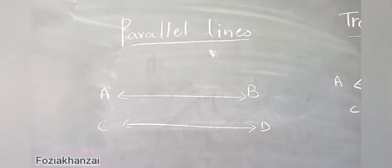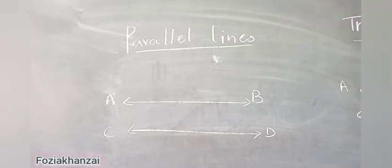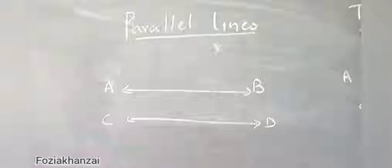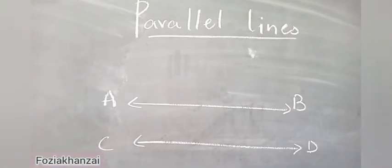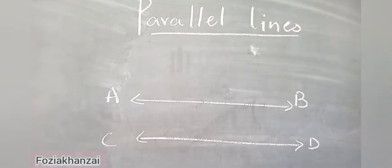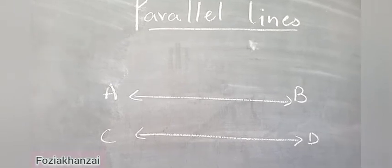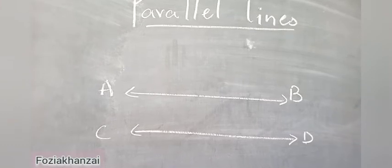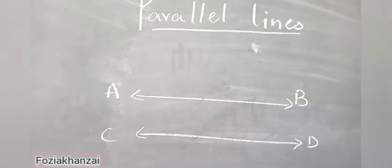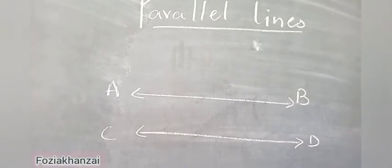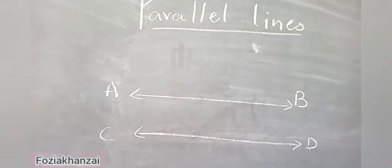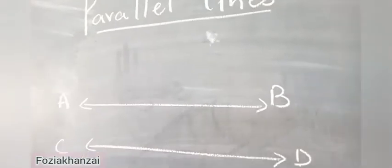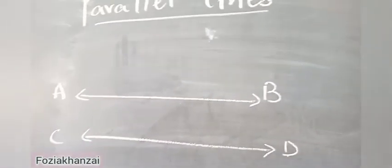In front of you, AB and CD — two parallel lines are given. Parallel lines are straight lines. These lines have the same distance between them. Sometimes we have two, three, or more than three parallel lines, but they have the same distance.